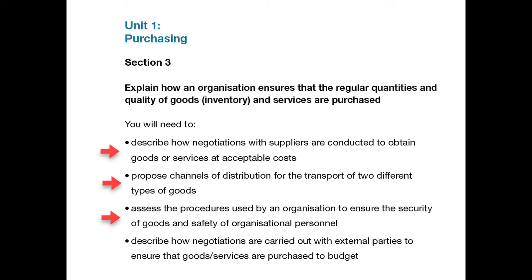In essence, bullet point 4 is about monitoring and controlling the process that is in place, particularly from the point of view of being aware of any actual or potential variants, and taking appropriate corrective action in conjunction with adopting techniques such as JIT.